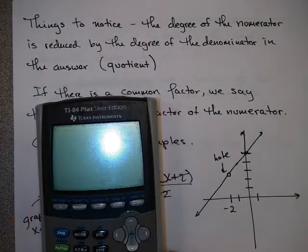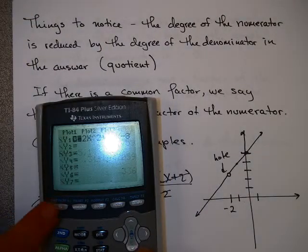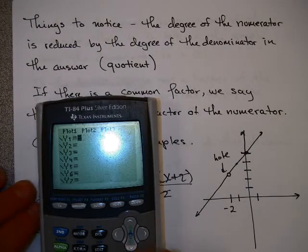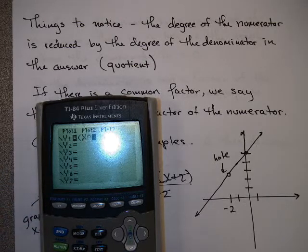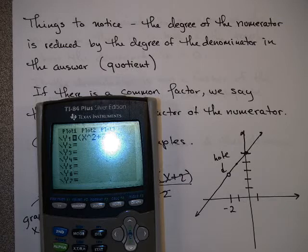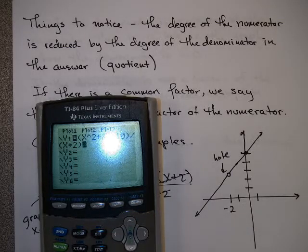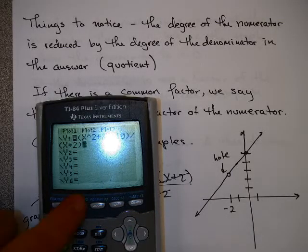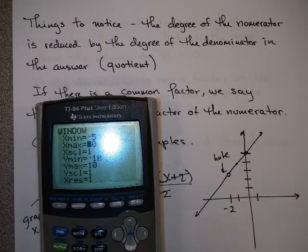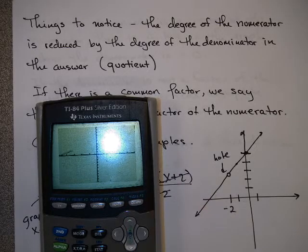If we look at our graphing calculator, and I clear this out, and I put in my original expression, x squared plus 7x plus 10 divided by x plus 2. Notice the parentheses in the numerator and denominator. And I'm going to pick a window from minus 5 to 5, and let's say minus 10 to 10 should be fine. Here's my graph, and you'll notice it looks just like a line.